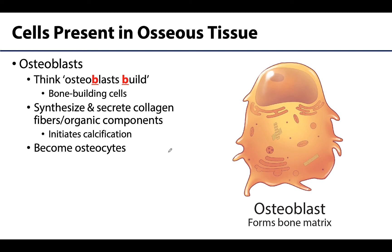Osteoblasts are bone-building cells. Bone-building cells are going to produce and secrete collagen fibers and other organic components — these are the organic components of the extracellular matrix. And it is these organic components that are needed to initiate calcification, or tissue hardening. In this case, we're talking bone tissue hardening, which is very important in terms of the structure of bone.